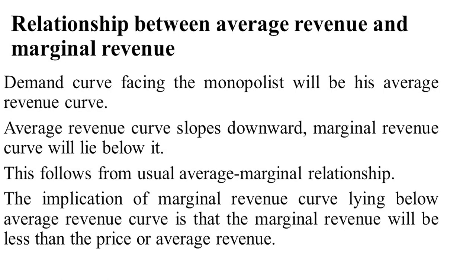Now let us see the relationship between average revenue and marginal revenue. The demand curve facing the monopolist will be the average revenue curve. Thus, the average revenue curve of the monopolist slopes downward throughout its length. Since the average revenue curve slopes downward, the marginal revenue curve will lie below it. This follows from the usual average-marginal relationship. The implication is that the marginal revenue will be less than the price or average revenue.